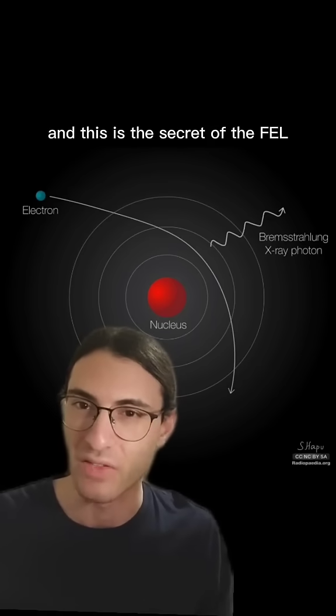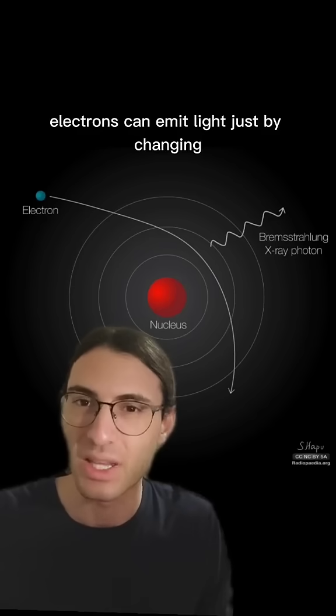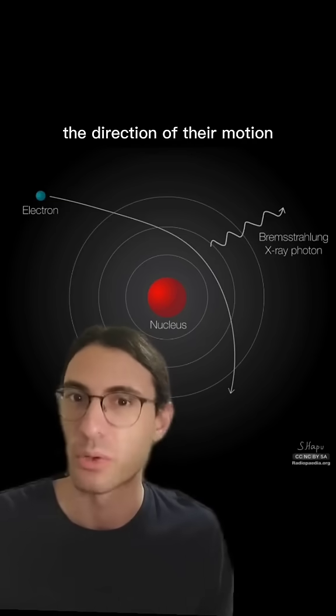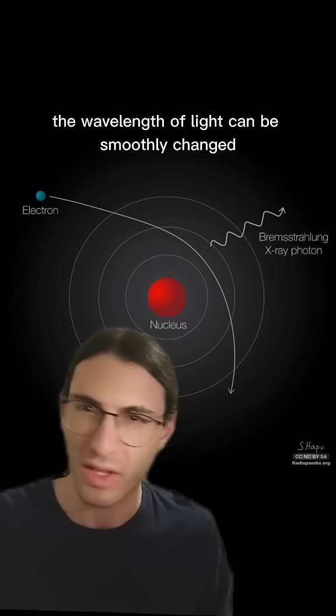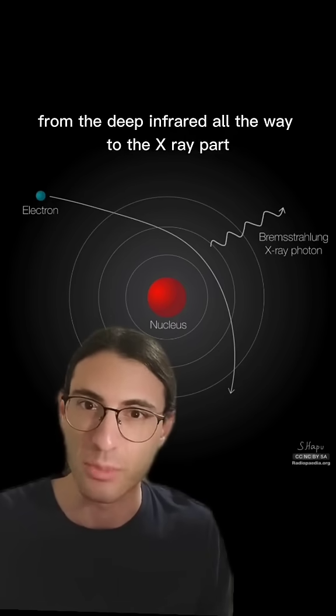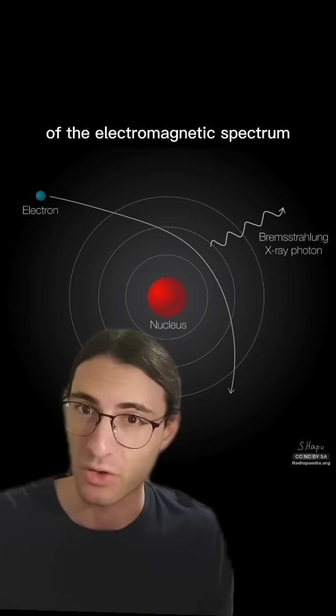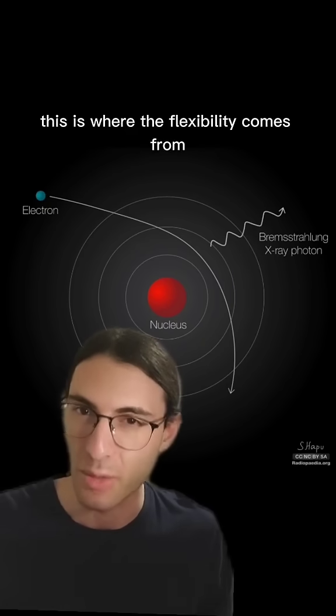And this is the secret of the FEL. Electrons can emit light just by changing the direction of their motion. So by adjusting the speed of the electrons and the strength of the magnets, the wavelength of light can be smoothly changed from the deep infrared all the way to the x-ray part of the electromagnetic spectrum. This is where the flexibility comes from.